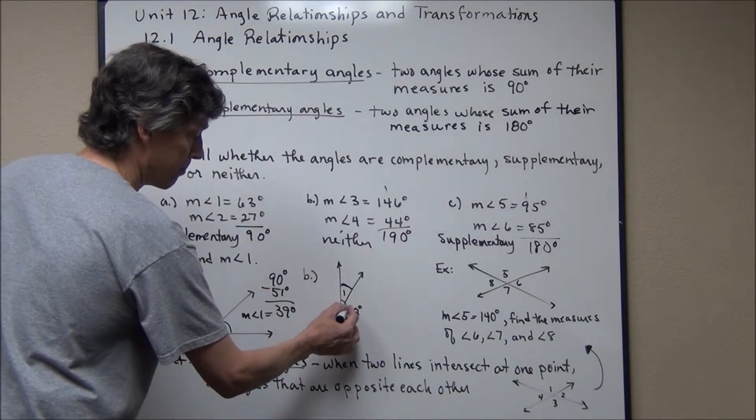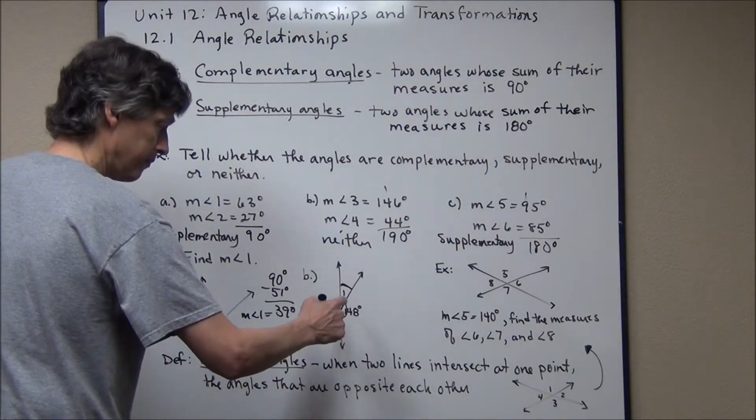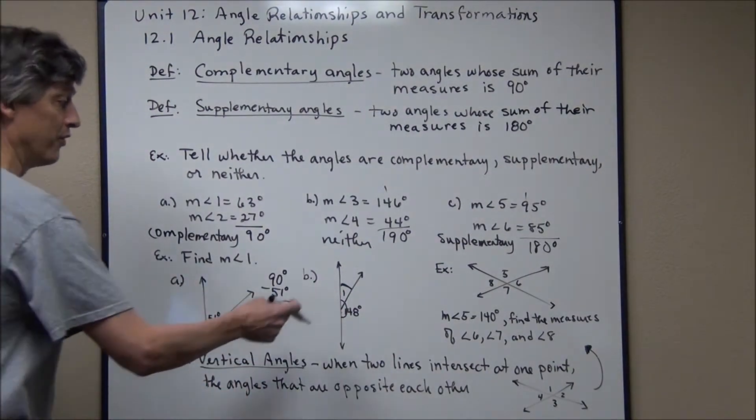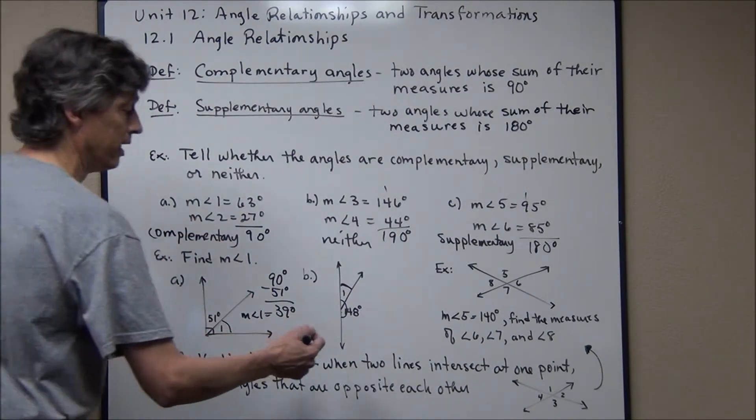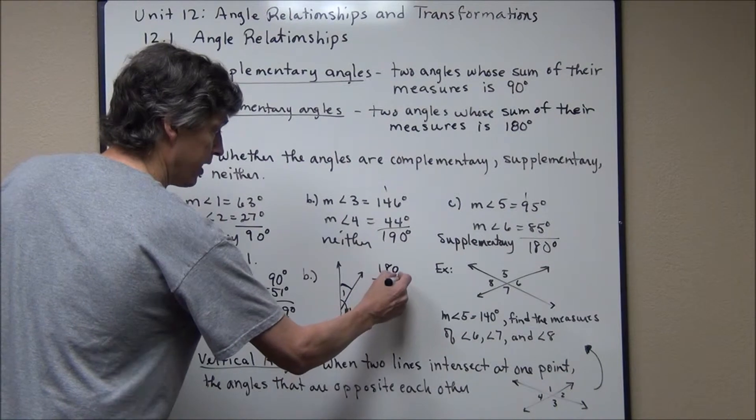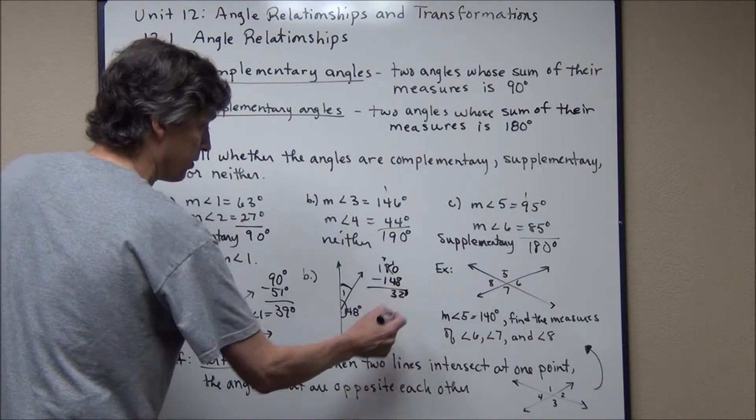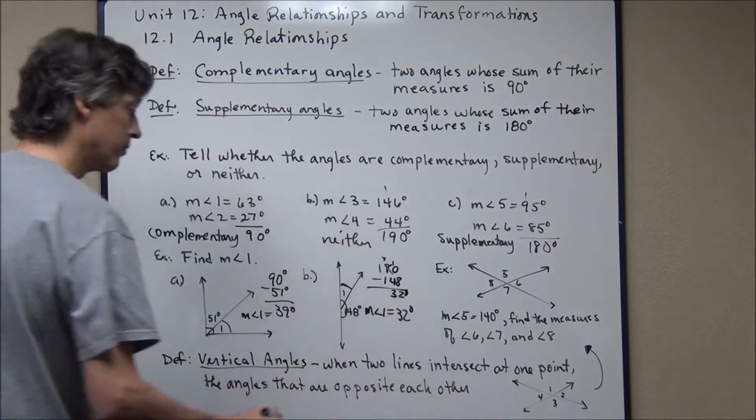These two angles combined are 180 degrees. So if I have one at 148, I can find the other by subtracting. These two angles are going to be supplementary, because they add up to 180. So the measure of angle one would be 180 minus 148, which is, and I got to do all sorts of borrowing here, two, three, 32 degrees. So the measure of angle one is 32 degrees.